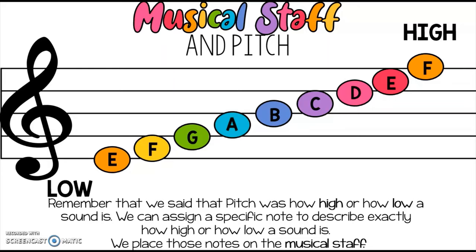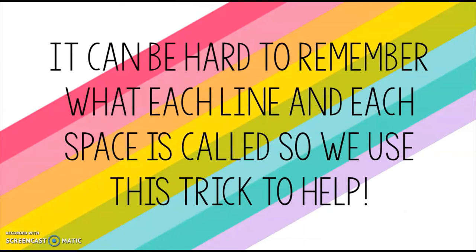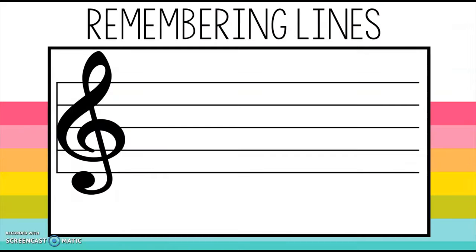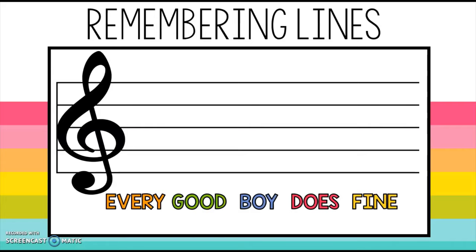We already know that each note has its very own name. Let's talk about them: E, F, G, A, B, C, D, E, F — and it goes on and on repeating that pattern, A to G. But it can be really hard to remember what each line and each space is called, so there are two tricks we use to help remember.